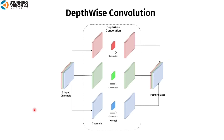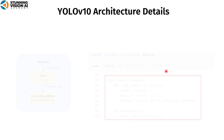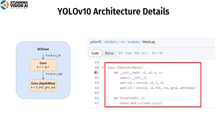In depth-wise convolution, each input channel is only processed by one kernel, which produces one output channel. For example with 3 channels, there will be 3 kernels — one for each channel — and each kernel is only applied to one input channel. This is used to reduce the number of convolution operations, thereby reducing computation and execution time. Next, the SCDown block, based on the SCDown class in block.py. This block combines two consecutive convolution operations to perform downsampling: a conv block with kernel 1 and stride 1 to change the number of channels, and a depth-wise conv block with kernel 3 and stride 2 to reduce spatial resolution.